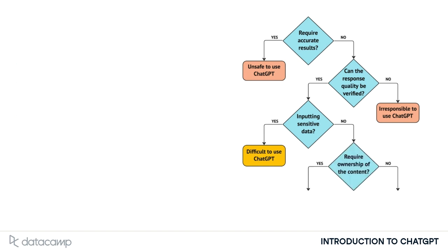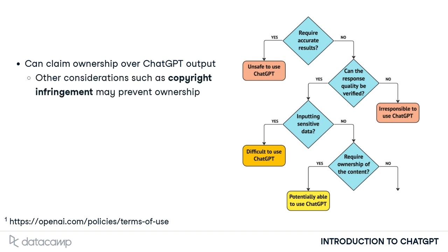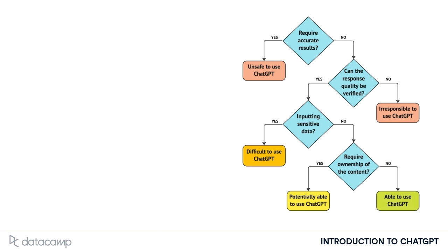Finally, ask whether ownership over the response is required. Ownership will likely be required if we intend to generate revenue from the response. Providing that users comply with OpenAI's terms of use, they can claim ownership over the output in many cases, but other considerations, such as copyright infringement, may prevent ownership. We'll dive deeper into the legalities and ethics of using ChatGPT a little later in the course. If the use case doesn't require ownership, dive right in and begin testing.